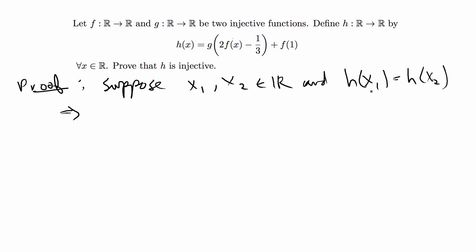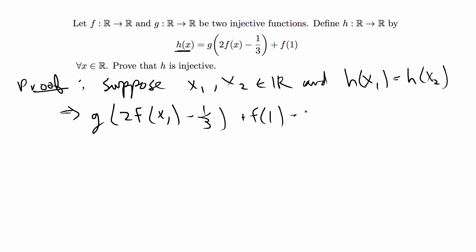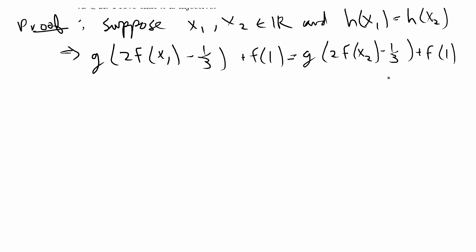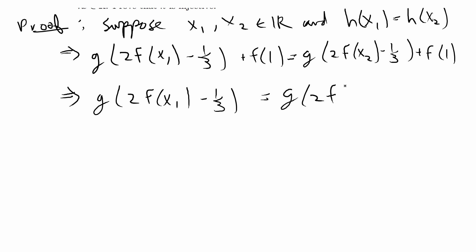We plug x1 and x2 into the equation. So we have g of (2f(x1) − 1/3) + f(1) is equal to g of (2f(x2) − 1/3) + f(1). Since f(1) appears on both sides, we can cancel it, giving us g of (2f(x1) − 1/3) is equal to g of (2f(x2) − 1/3).